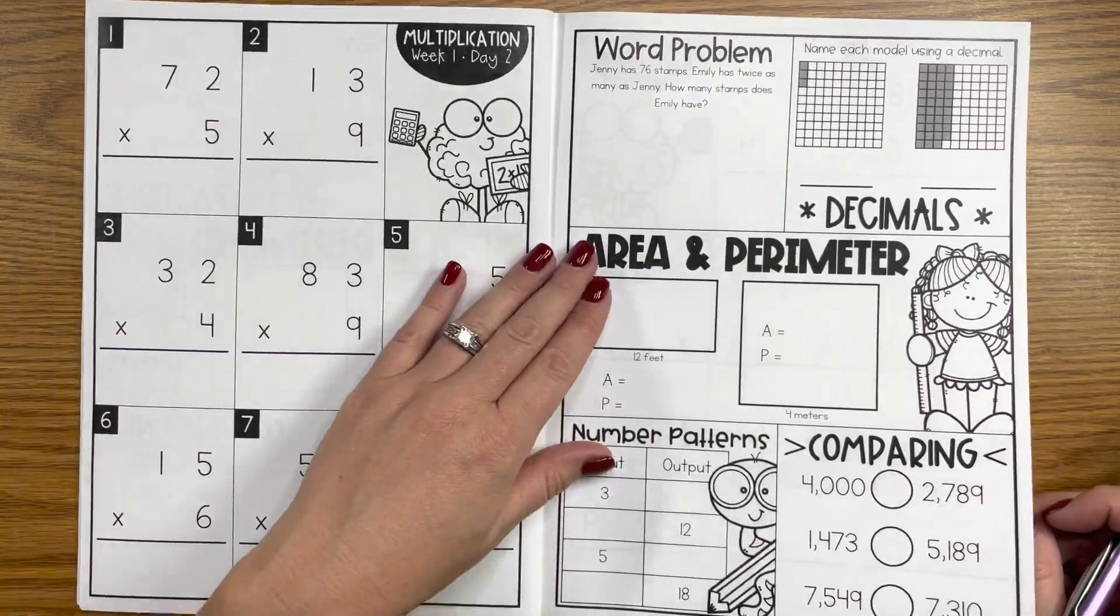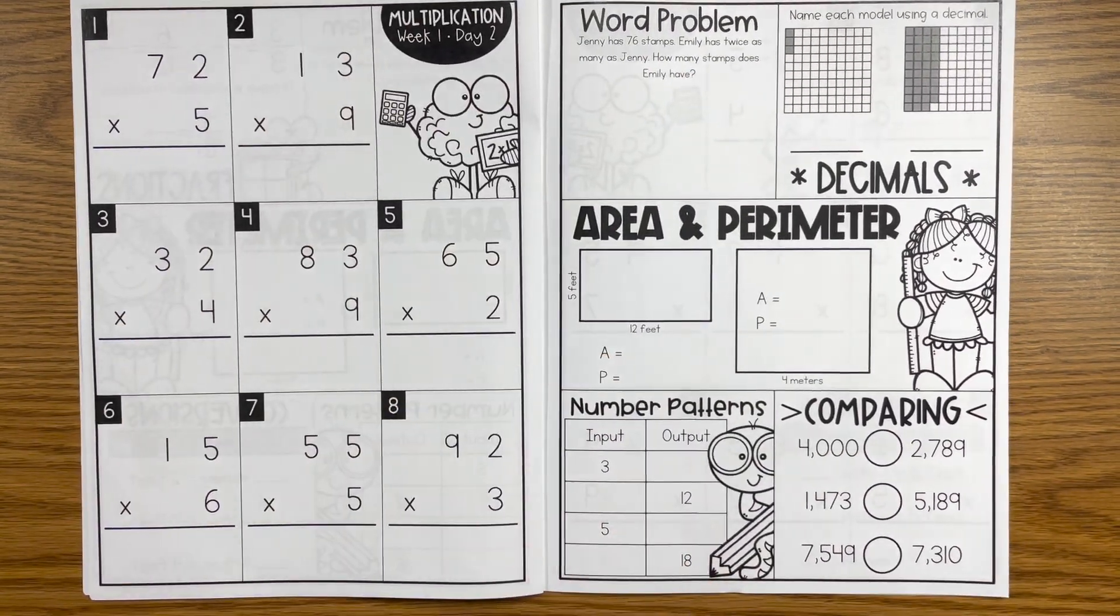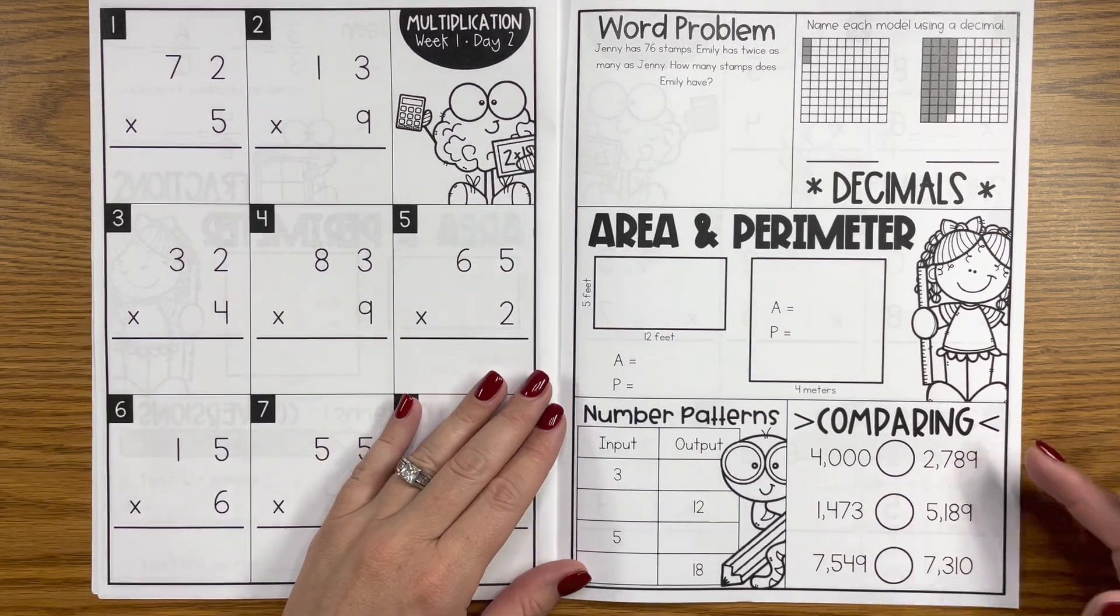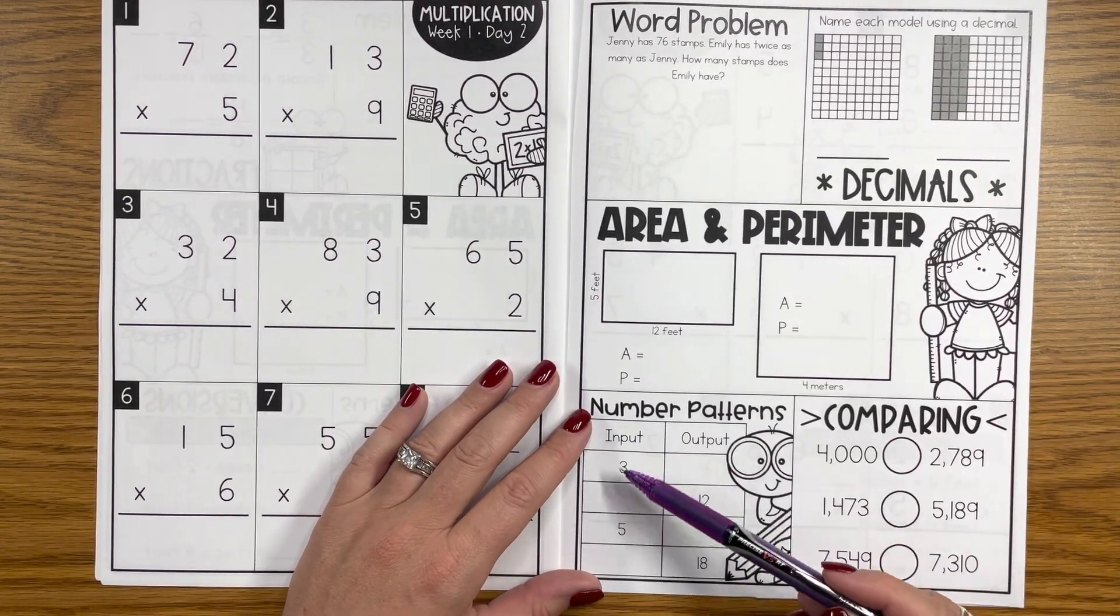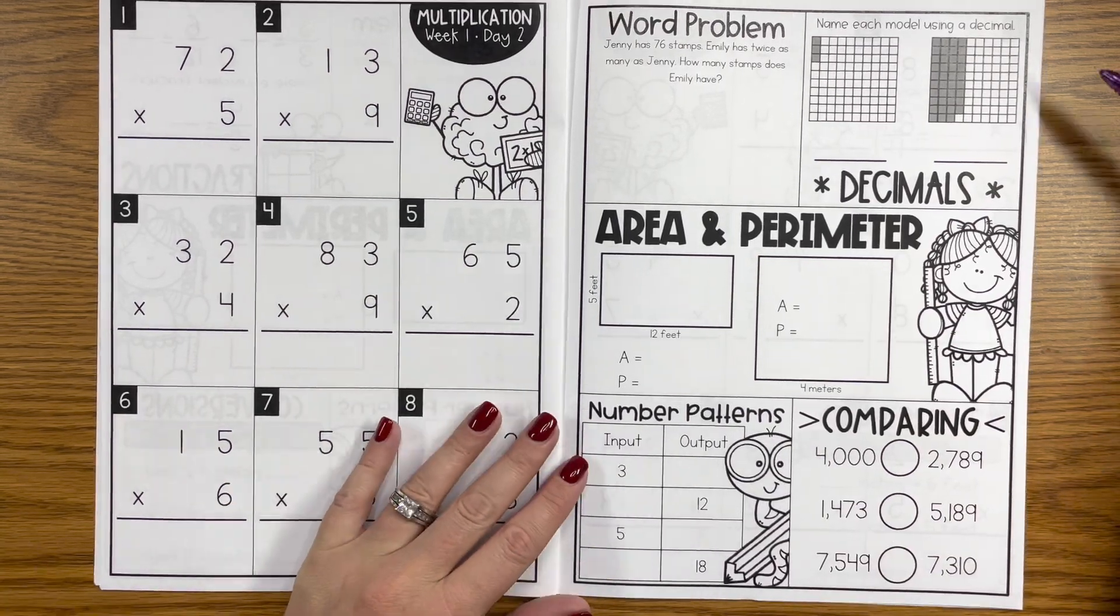However, the even number days will have some components that are different, really two components that are different. So they'll start with a word problem, area and perimeter isn't really going to change, number patterns not going to change.